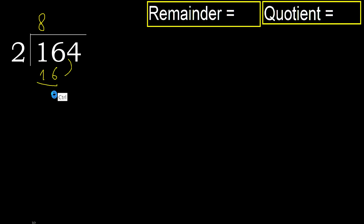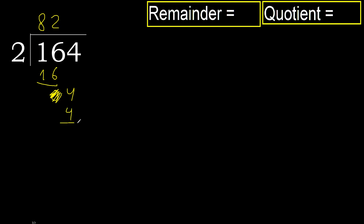Subtract, getting 0. Next, bring down the 4. 2 multiplied by 3 is 6 — 6 is greater. So try 2 multiplied by 2, which is 4 — it is not greater. Subtract, getting 0.